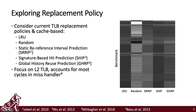TLBs are tag-and-SRAM arrays much like caches. So why not apply prior predictive replacement policies to TLBs? We consider the two current known TLB replacement policies, LRU and random, and three cache-based policies: SRRIP, or static re-reference interval prediction; SHIP, or signature-based hit prediction; and GHRP, global history reuse prediction. We focus on the L2 TLB because it accounts for the most cycles spent in the TLB miss handler.